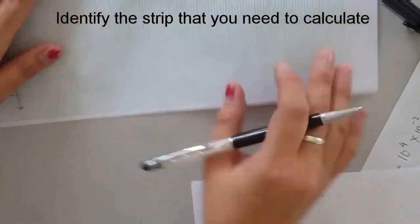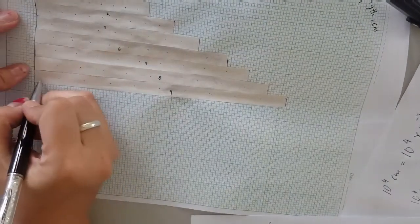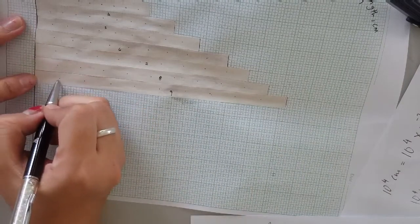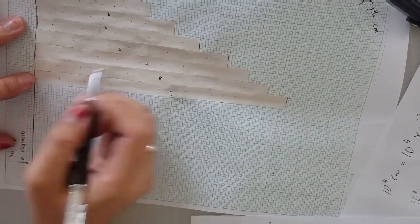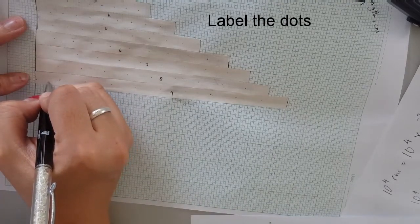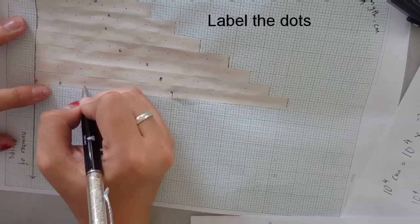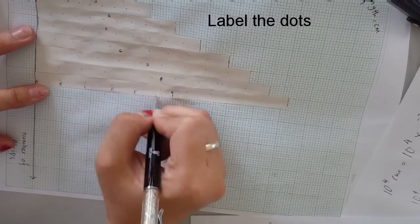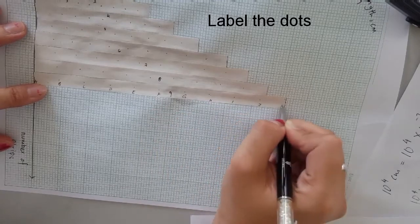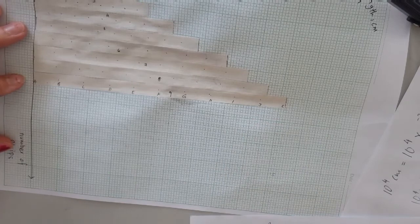For strip number nine, I have to find the initial part. This is my initial reading from here to here. I'm going to label this as A, B, C, D, E, F, G, H, I, J, and K. I'm sure all of you can see that.